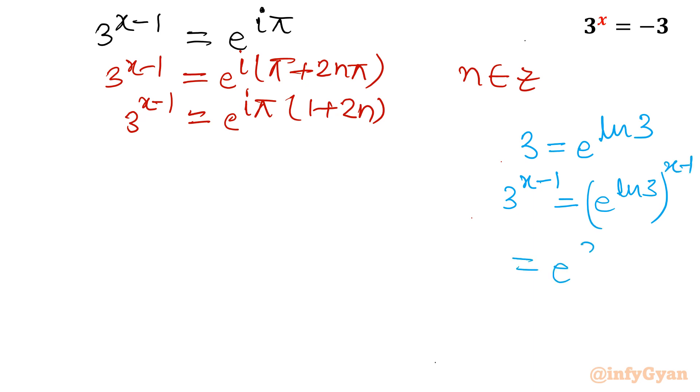So this value will be e power x minus 1 ln 3. Let's put here. I will write e raised to the power x minus 1 ln 3 is equal to e power i pi times 2n plus 1.